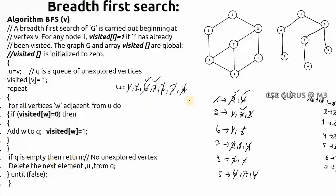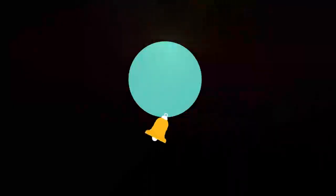To summarize: Breadth First Search starts from one vertex, visits all its adjacent vertices first, then selects each visited vertex and checks its adjacents. It proceeds until all vertices are visited. There should be no cycle in the resultant tree. This is the procedure for Breadth First Search traversal.